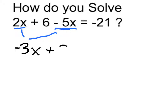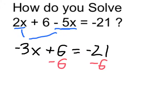So negative 3x plus 6 is going to equal negative 21. The next thing I do is subtract 6. The left side that cancels out and leaves me with just a negative 3x. And on the right side I need to do the same to balance it, and negative 21 minus 6 is negative 27.